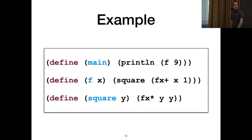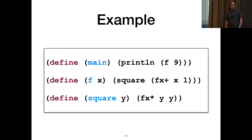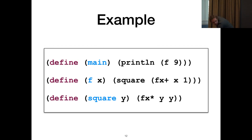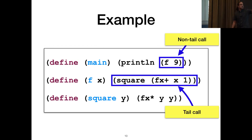Here's a simple example to show how the C back-end works. This program prints the result of f of 9, where f adds one and squares the result. I just want to show that there are non-tail calls and tail calls. The call to square is a tail call, and the call to f is not.